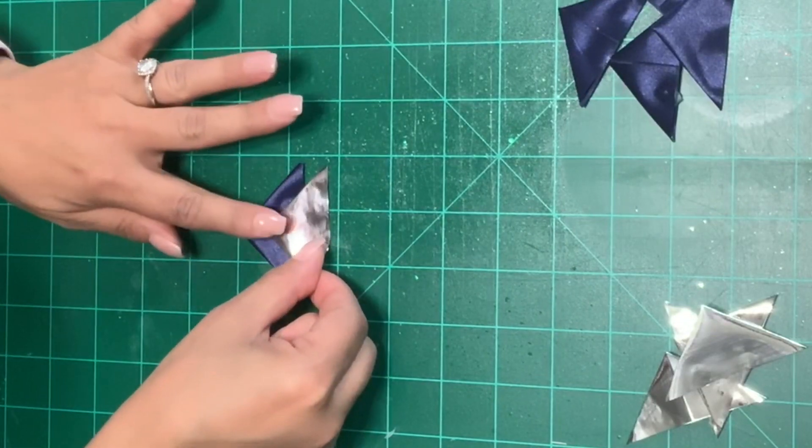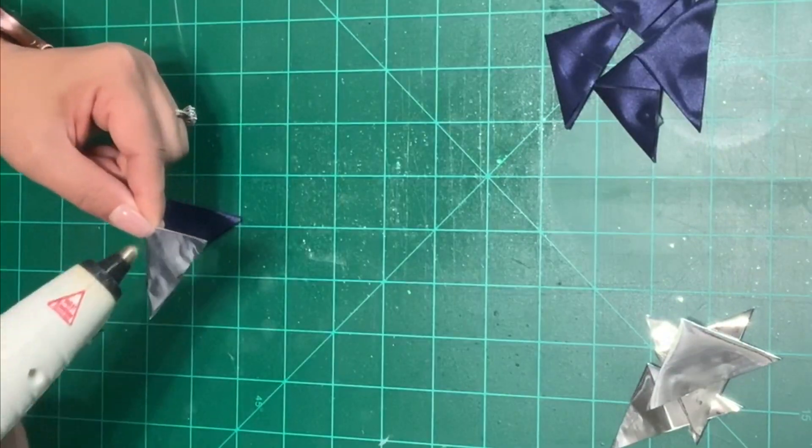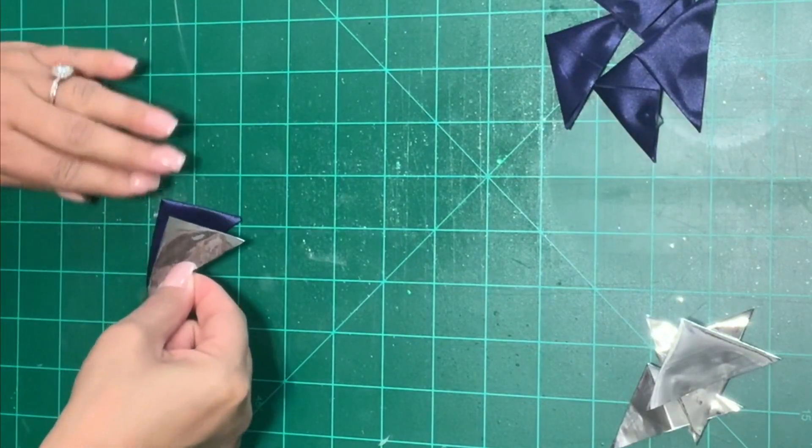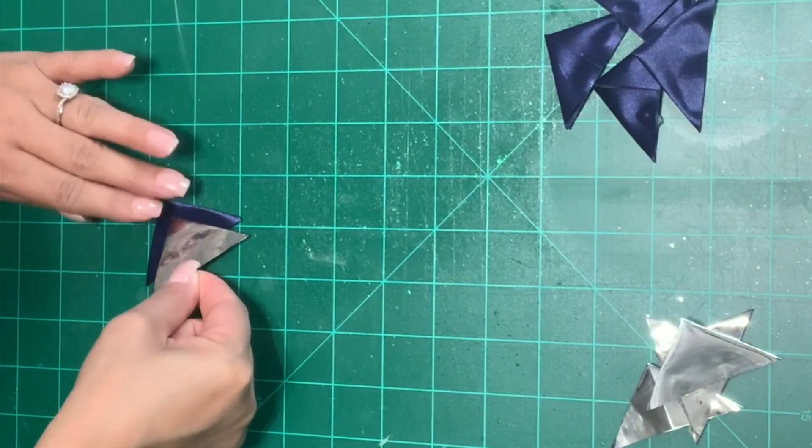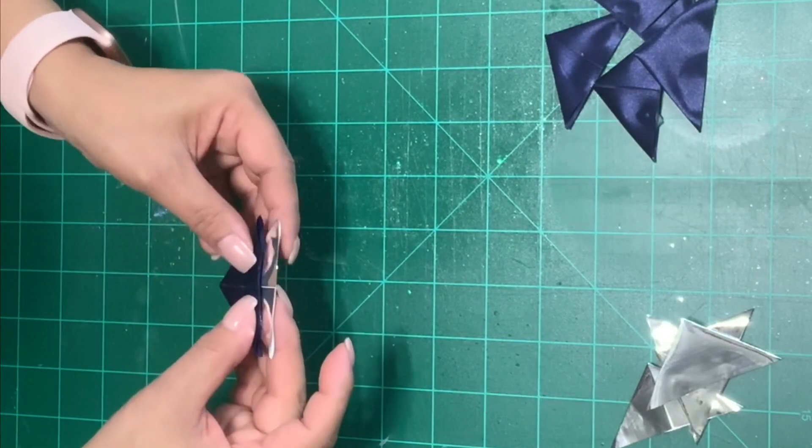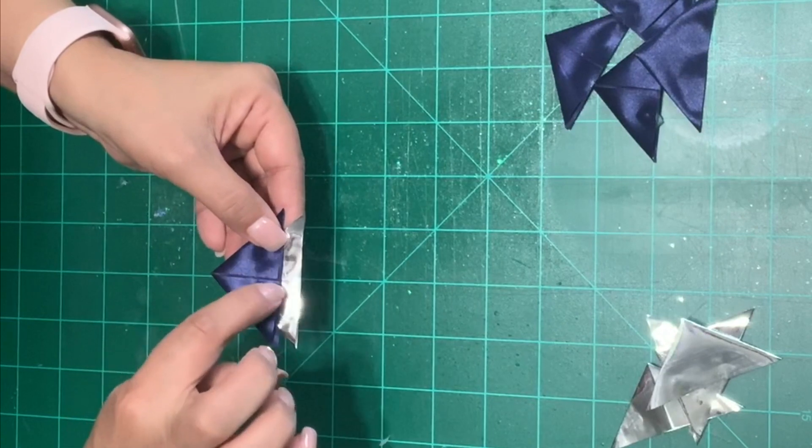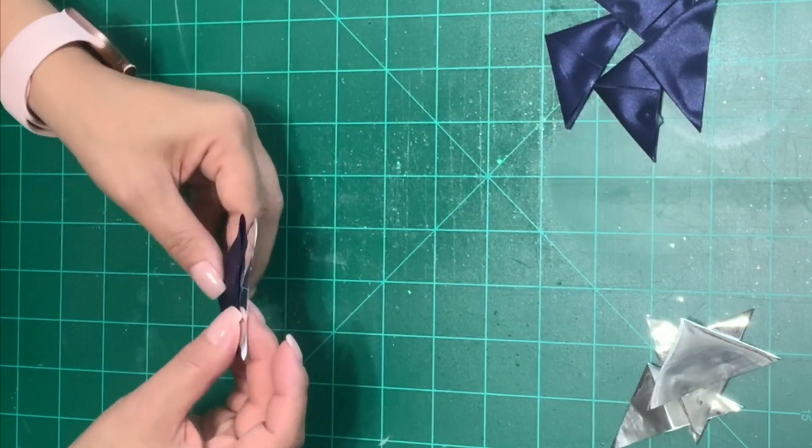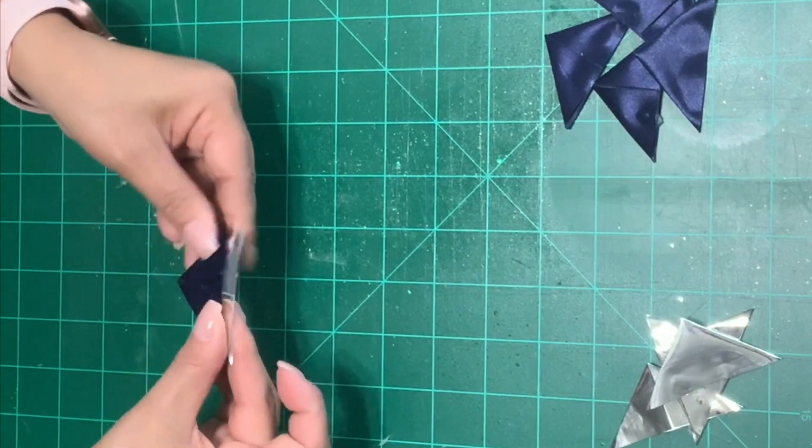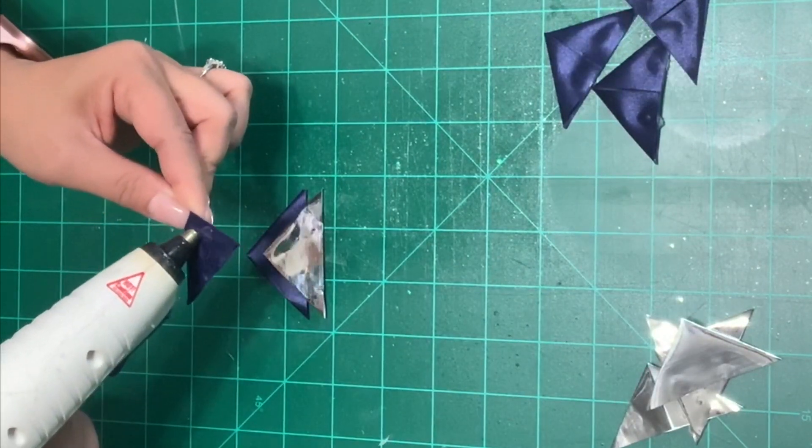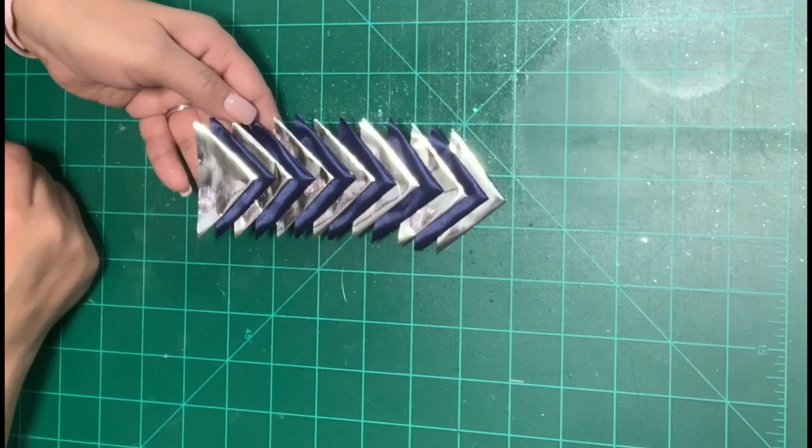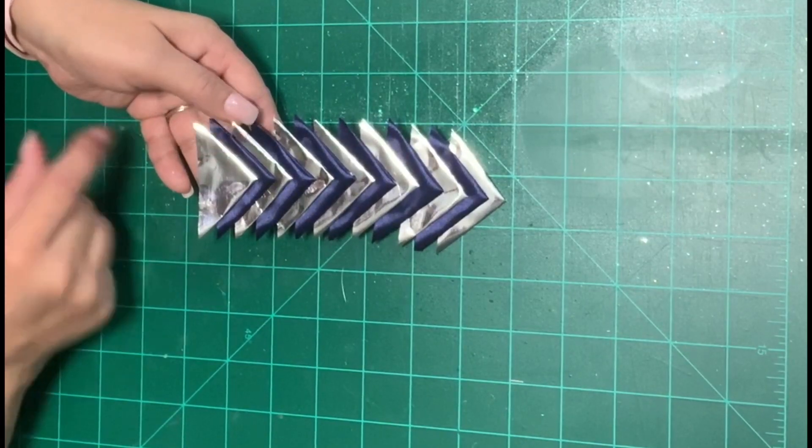Once you're done with all your strips we're going to start gluing them together. I'm adding a little bit of glue only to the bottom of my arrow and I will place it on top of my other arrow so that it's facing down. I'm going to be aligning it with the point and if you turn it around at the back you can also use the line in the back as a guide to make sure you're on there straight. You will glue your next one alternating colors until you get to your last one. This is what it'll look like once you're done gluing all your arrows down.